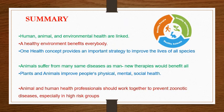In summary: human, animal and environmental health are linked. A healthy environment benefits everybody. The One Health concept provides an important strategy to improve the lives of all species. Animals suffer from many of the same diseases as humans, so new therapies would benefit all. Plants and animals improve people's physical, mental and social health. Animal and human health professionals should work together to prevent zoonotic diseases, especially in high-risk groups.